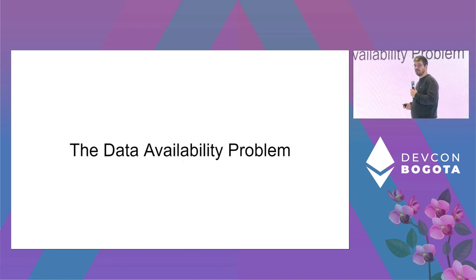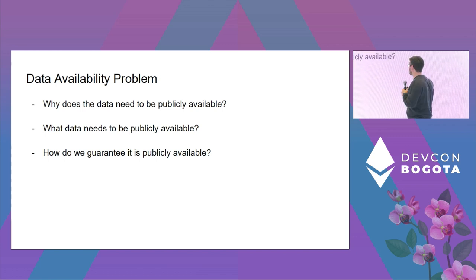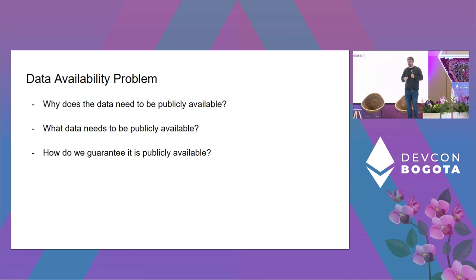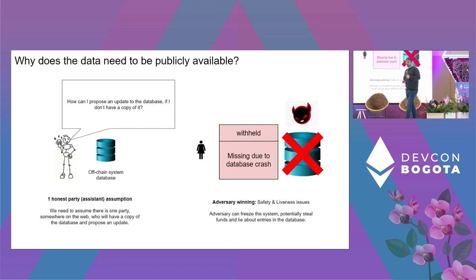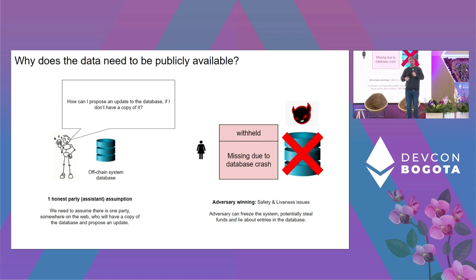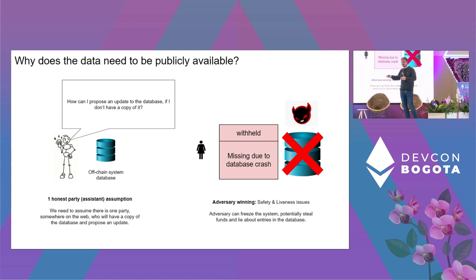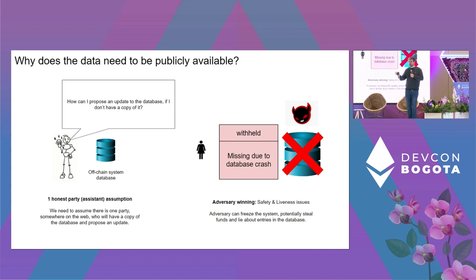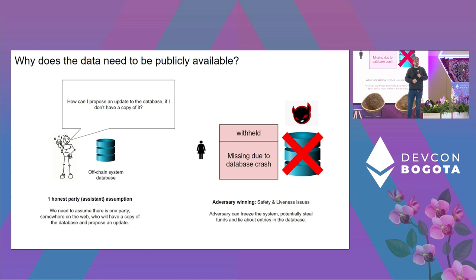Why does the data need to be public? Remember the one honest party assumption — anyone could help the bridge protect against the all-powerful adversary. The only way an honest party can help is if they have a copy of the database: a copy of the most recent state so they can execute transactions and propose an update to the bridge. If the adversary can withhold one update and prevent anyone from getting a copy of the database, they win the game.